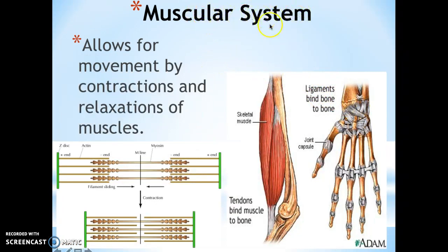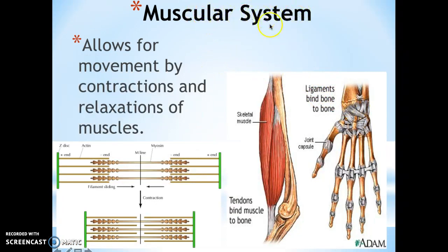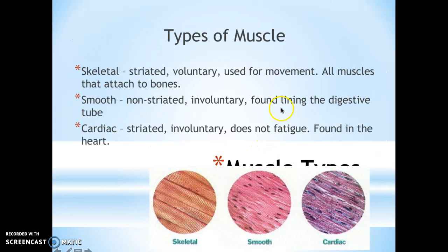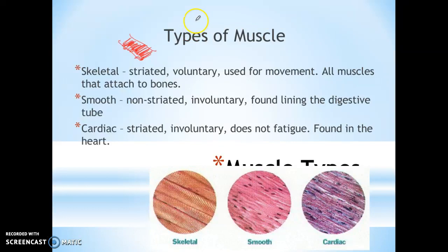The next one is the muscular system. The muscular system allows for movement by contractions and relaxations of muscles. Muscles are attached to bones, and that is what allows for movement. The different types of muscles we have to remember: skeletal muscles are basically what we call striated, meaning that these are muscles that have stripes to them. They look striated because of the shape of the cells that they have. And they are voluntary, meaning you can use these muscles at your will.